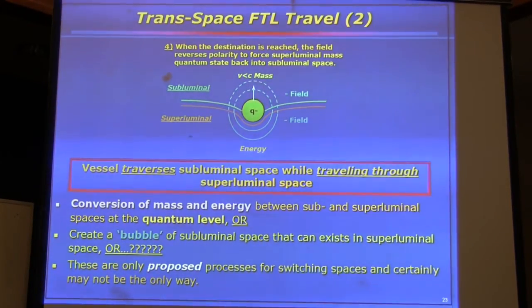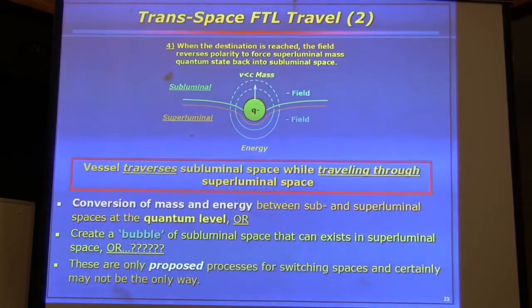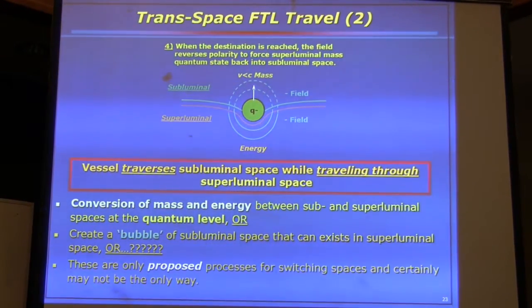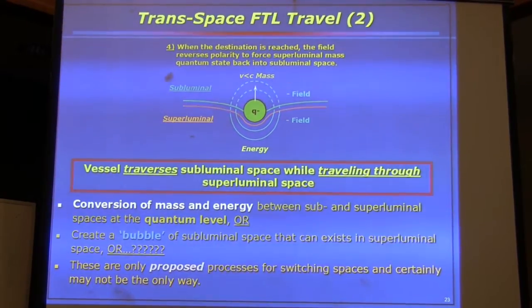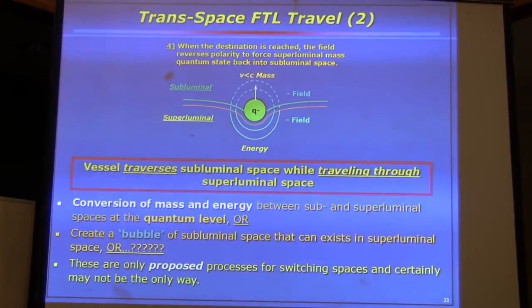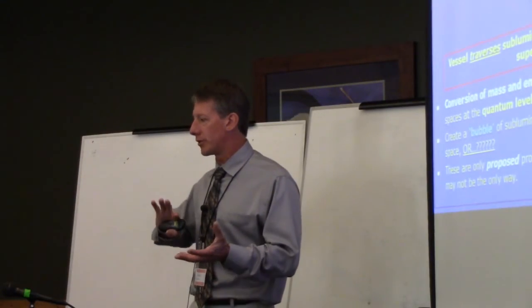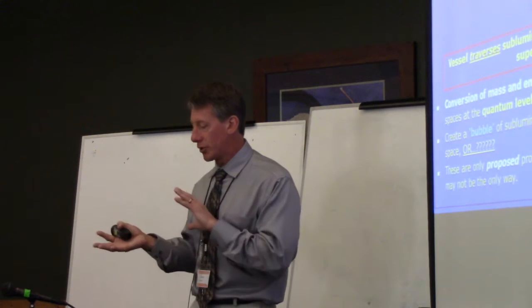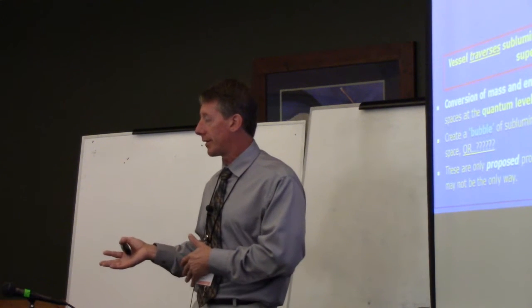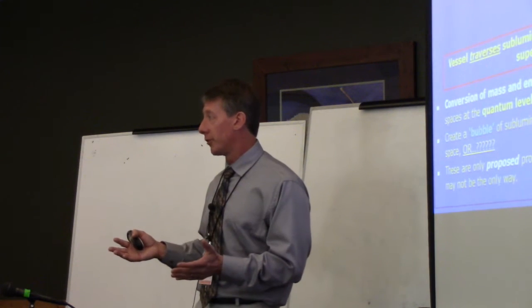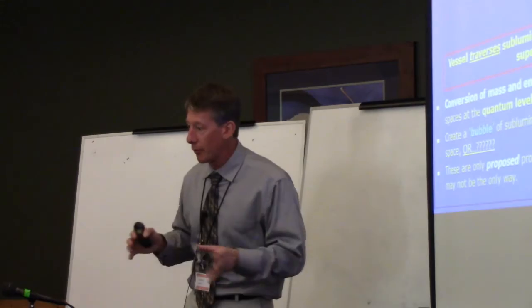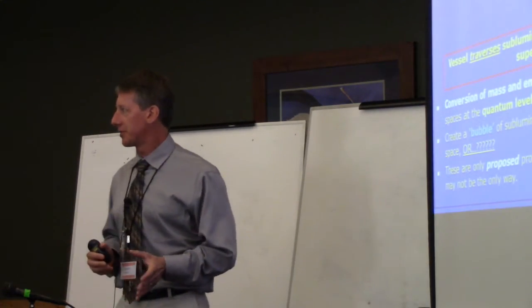When we get to where we want to go, we reverse whatever that means and pop back into the subluminal realm. These spaces are just states of motion, so popping through just means accelerating. If we could understand how the teq does it, we'd be able to figure that out. There might be something at the phase and group velocity level to enable that. I'll propose three ways we might be able to do this transformation.